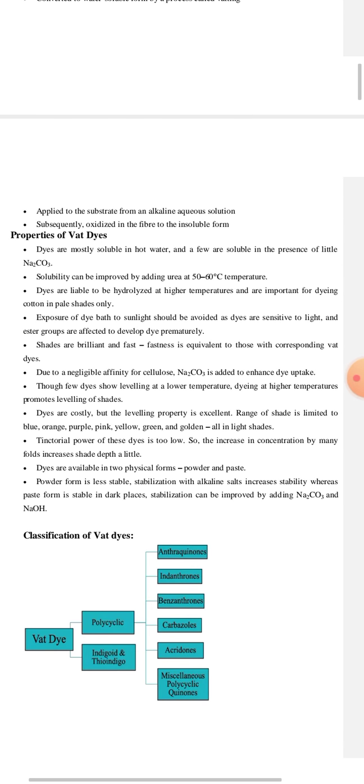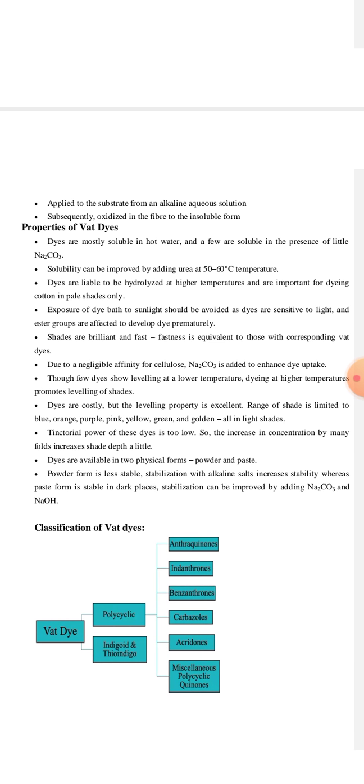Now, we will have a look at some of the properties of vat dyes. These dyes are mostly soluble in hot water and some of them are also soluble in sodium carbonate. But their solubility can be increased by adding urea. These dyes can be easily hydrolyzed. If we expose dye paste to sunlight, then it can be dangerous for the dyes, so it should be avoided as dyes are sensitive to light. Their ester groups are affected to develop dye prematurely. The shades and colors of the vat dyes are brilliant and they are fast.